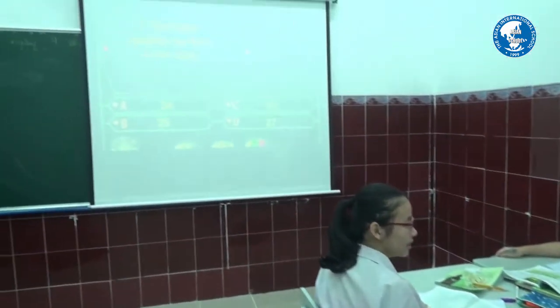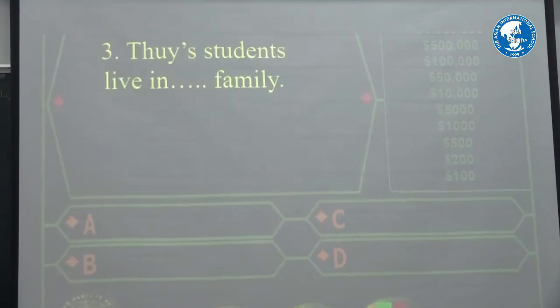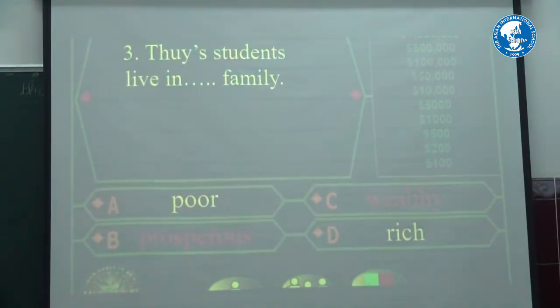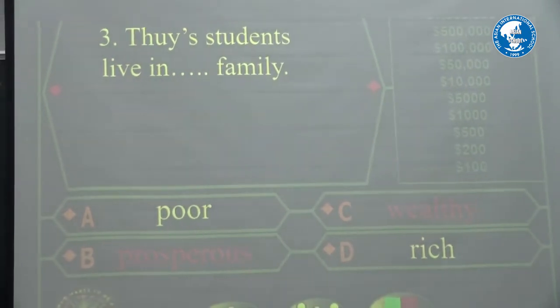Question two: how many students are there in her class? The answer is 15. B and C are wrong answers. The correct answer is A — 15 students.